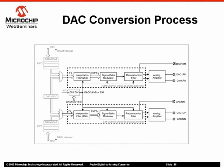Now let's take a closer look at the D-to-A process. First, the digital interpolation filter upsamples the input signal to create additional interpolated data points. The oversampling ratio is 256 to 1, or 256 times the incoming sampling rate. For example, a 100 kS per second input signal, which is the maximum sampling rate, produces 25.6 million data points per second. The interpolation filter also eliminates unwanted noise produced by the upsampling process.